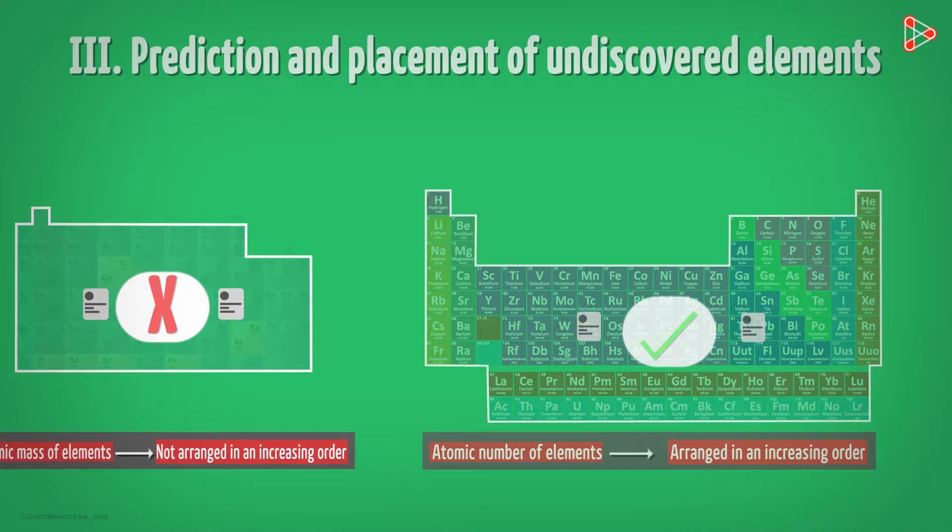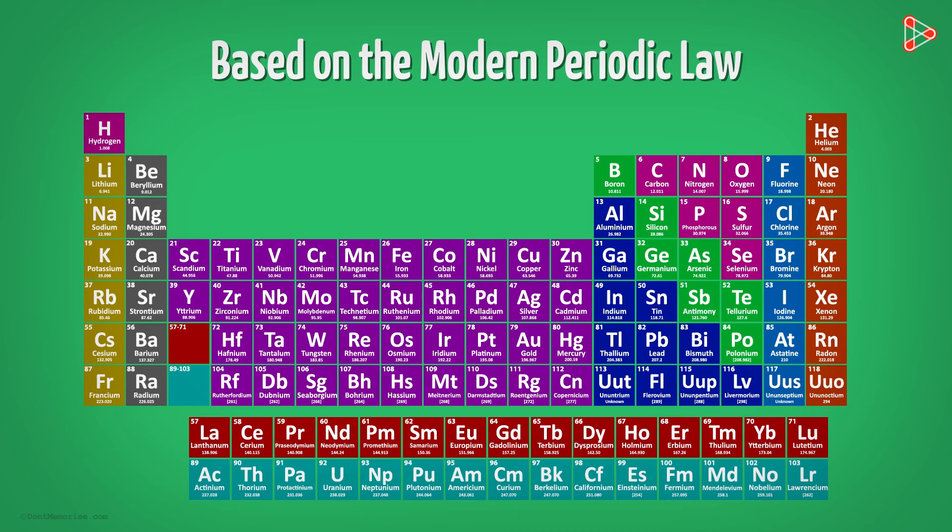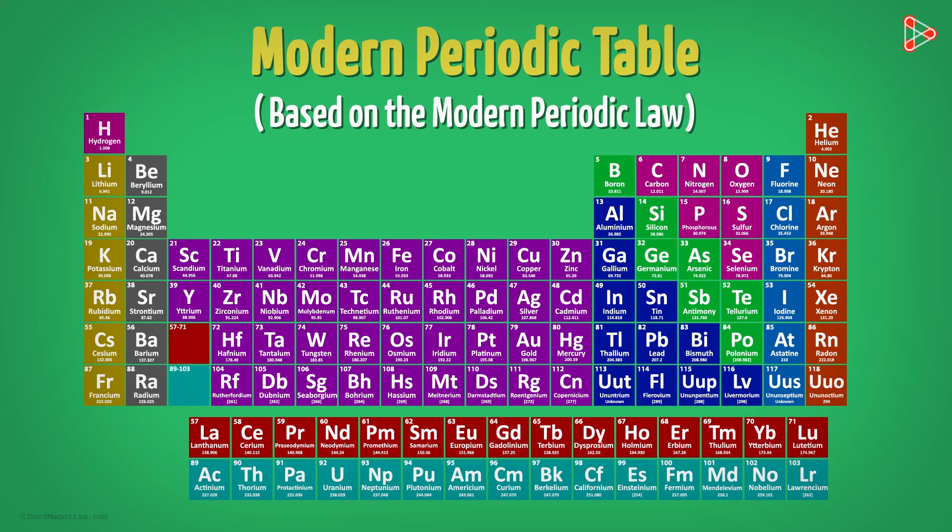And that is the reason why the new periodic table surfaced as the most useful tool for studying elements. The newly arranged table of elements was based on the modified law. Do you remember the name of this important law? Yes, it is the modern periodic law. So can you guess the name of the table that was based on this law? Yes, it was called the modern periodic table.